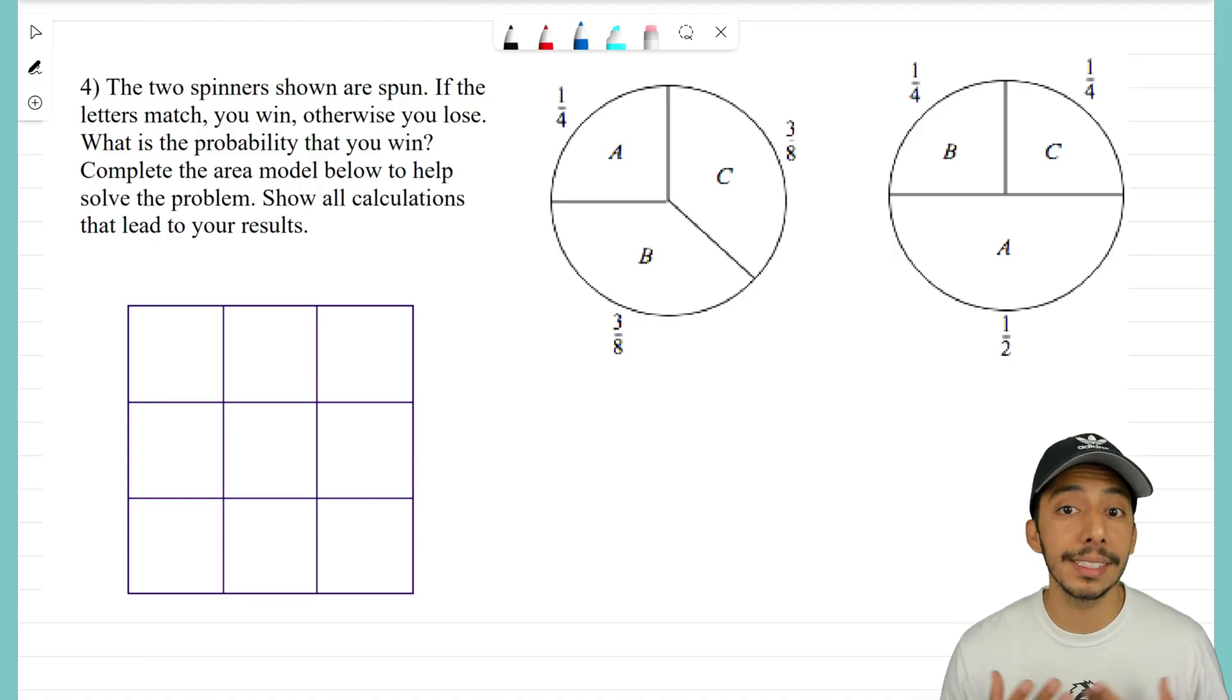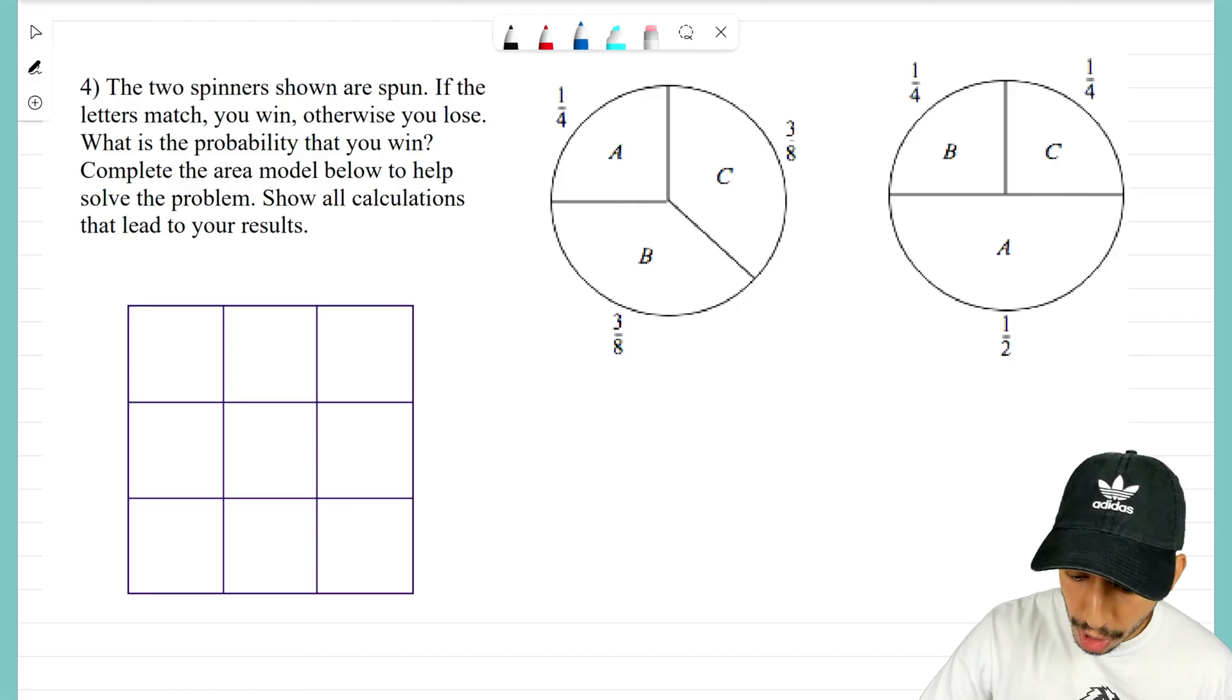All together kind of tricky on your own, so that's why an area model is going to help us figure this out. With an area model we have our two events—one on the top, one on the side. Well, our two events here are spinner number one and spinner number two.